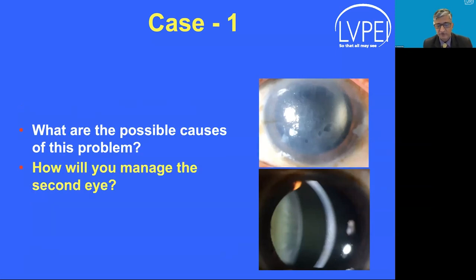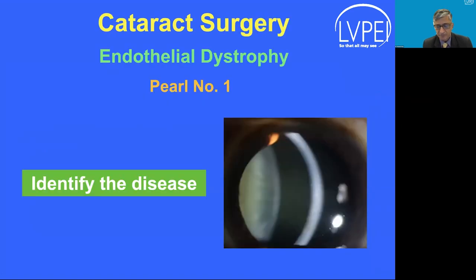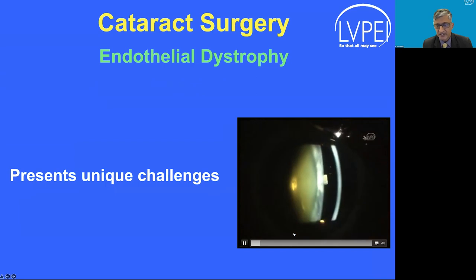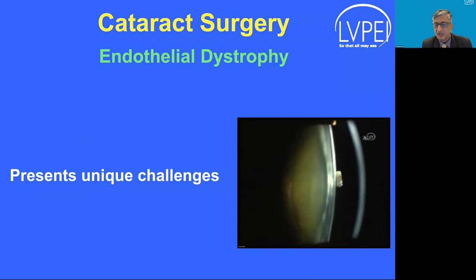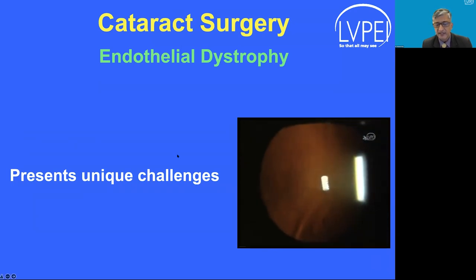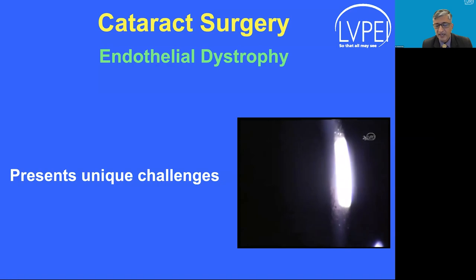The second question is: how do we manage the second eye to avoid the same situation? First, we must be aware of Fuchs' endothelial dystrophy, a condition causing progressive loss of endothelium. When the critical mass of endothelial cells is lost, it results in corneal edema. This condition poses unique challenges if it remains unidentified — it can result in prolonged or irreversible corneal edema.